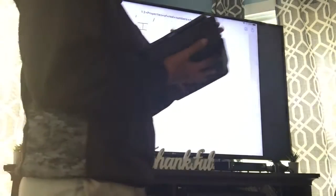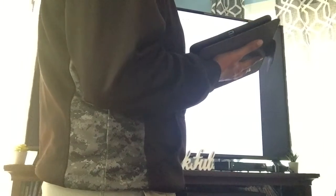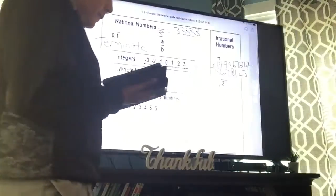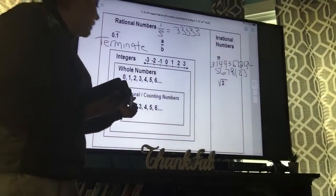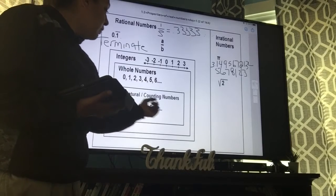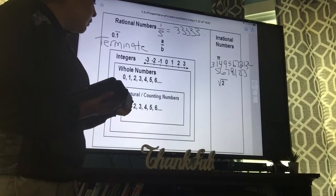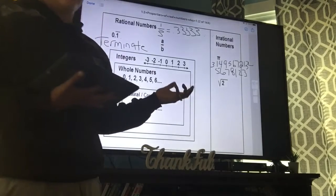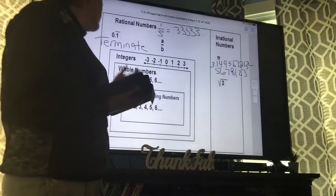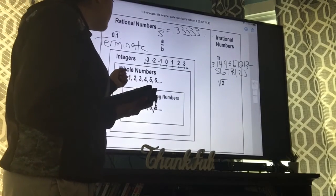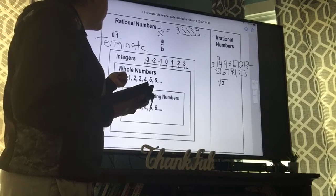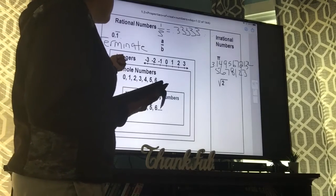I'm going to do one more. Zero. So where does zero fall? Is it a natural number? Is zero listed on here? No. It's only one and greater than one positive whole numbers. Whole numbers include zero. So that one's going to be a yes. And if the inside one's a yes, then the rest of them are a yes.